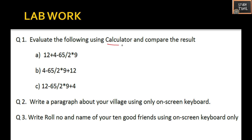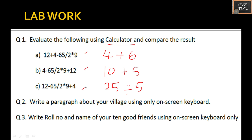For lab work, evaluate the following using the calculator: try simple calculations like 4 plus 6, 10 plus 5, or 25 divided by 5. Try simple calculations first and then move to more complex ones. Next, write a paragraph about your village using only the on-screen keyboard. Open any application like Microsoft Word or Notepad and type using only the on-screen keyboard.